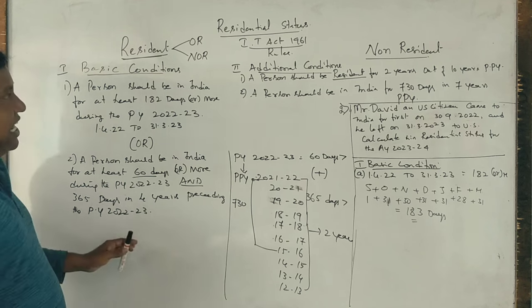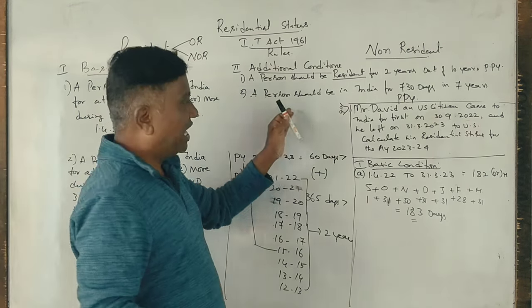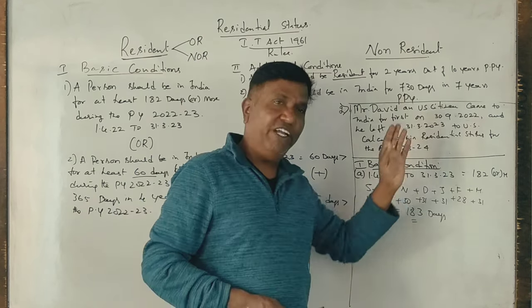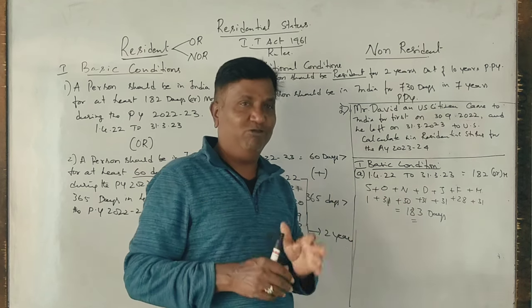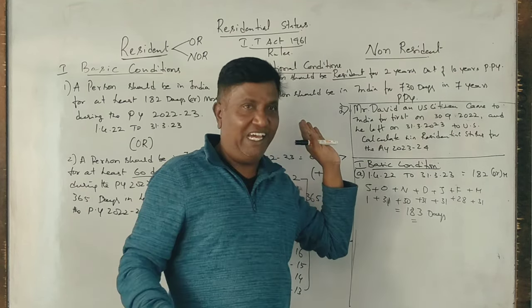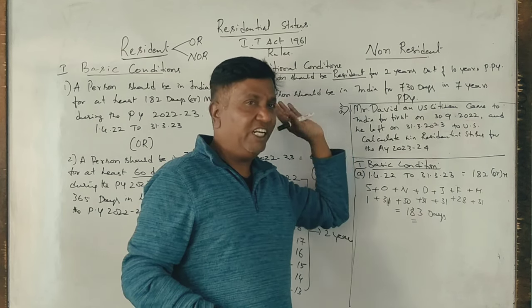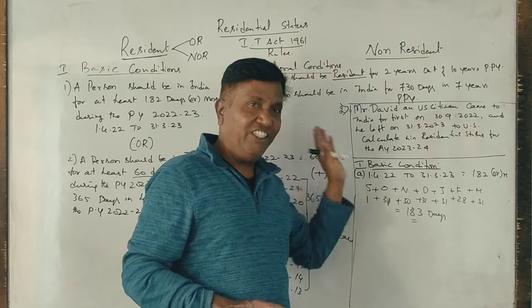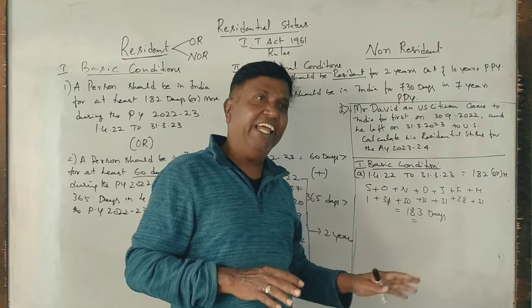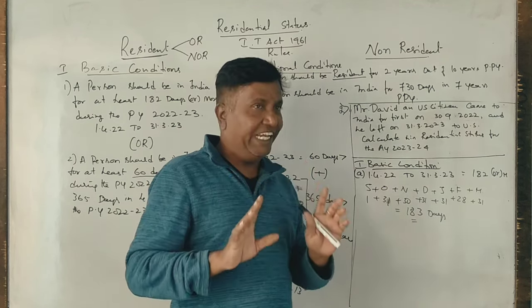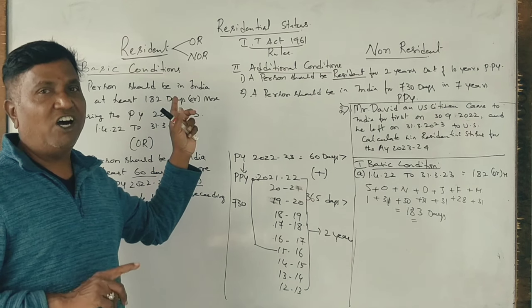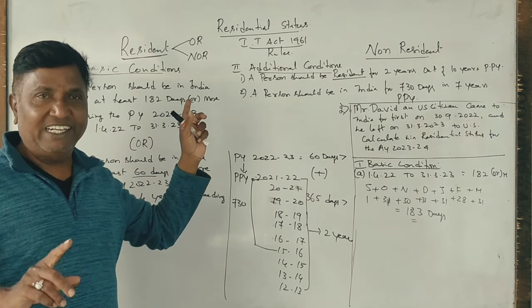Now we check the additional conditions. Was he resident in India in at least 2 out of 10 preceding years? No. Was he in India for 730 days or more in the preceding 7 years? He came for the first time on 30th September 2022, so he does not satisfy the second additional condition. Therefore, he is resident but not ordinary resident.